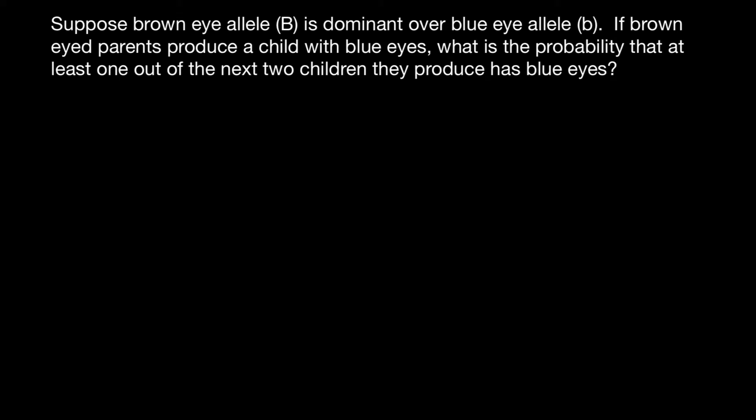According to our problem, two parents with brown eyes produce a child with blue eyes. That gives us information that both parents have to be heterozygous. So one parent has to be capital B and small b, and the other parent also has to be capital B and small b.